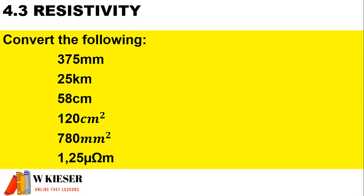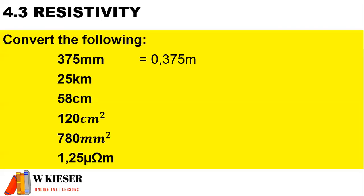Now, let's convert the following values. To convert 375 millimeters into meters, we would divide by 1,000 and that will give us 0.375 meters. To convert kilometers into meters, we would multiply by 1,000. Therefore, 25 kilometers is equal to 25,000 meters. To convert 58 centimeters into meters, we would divide by 100 and that will give us 0.58 meters.